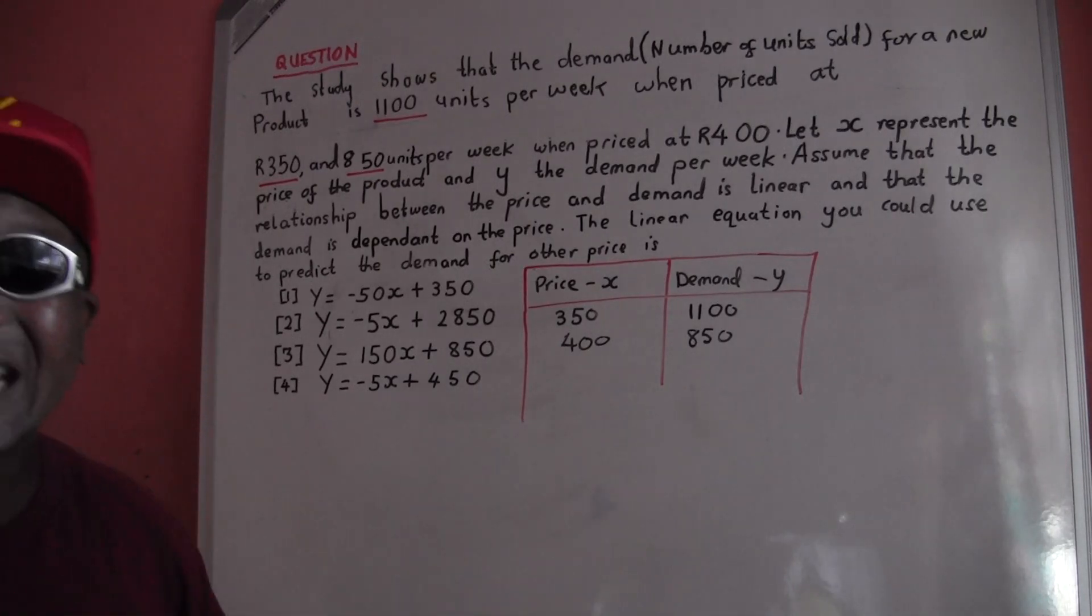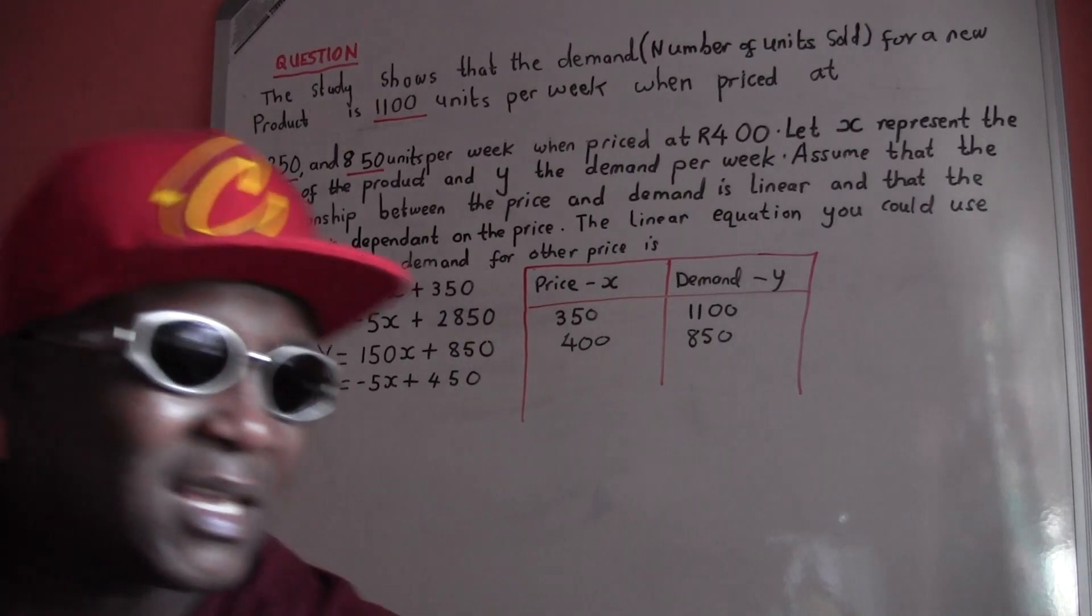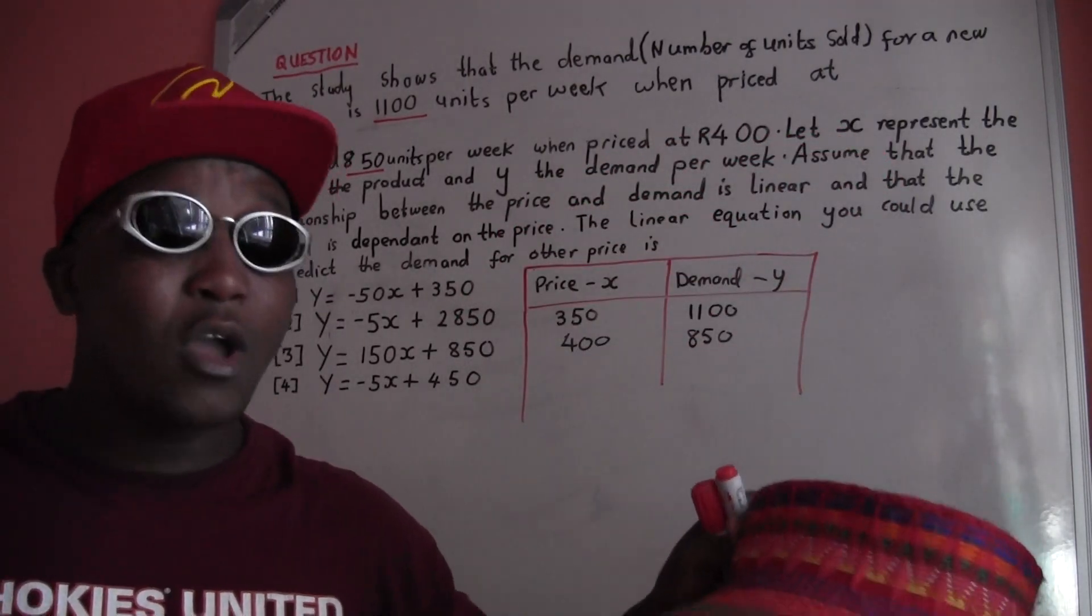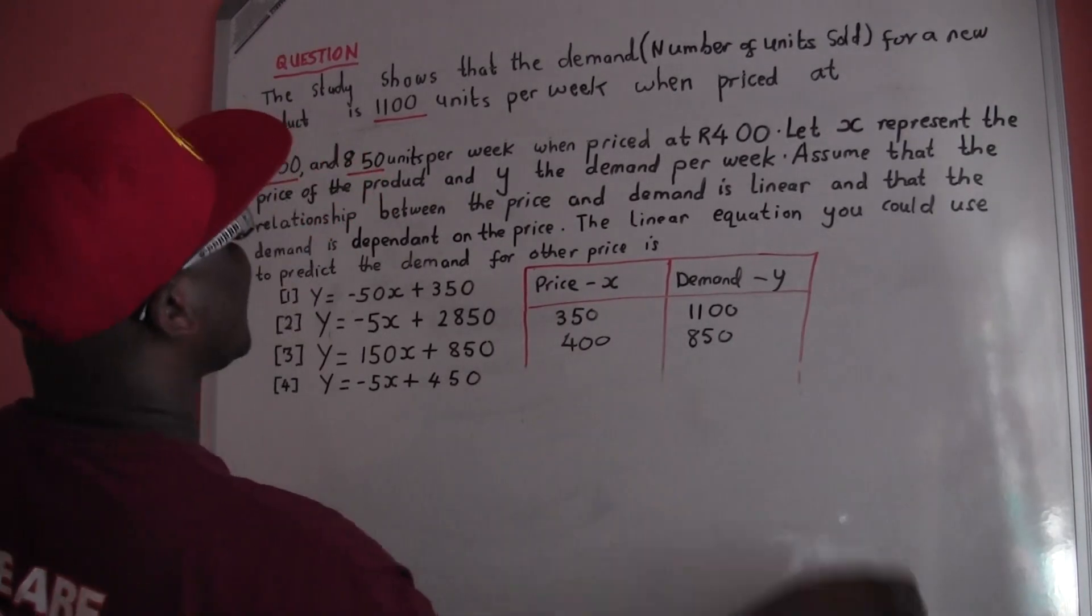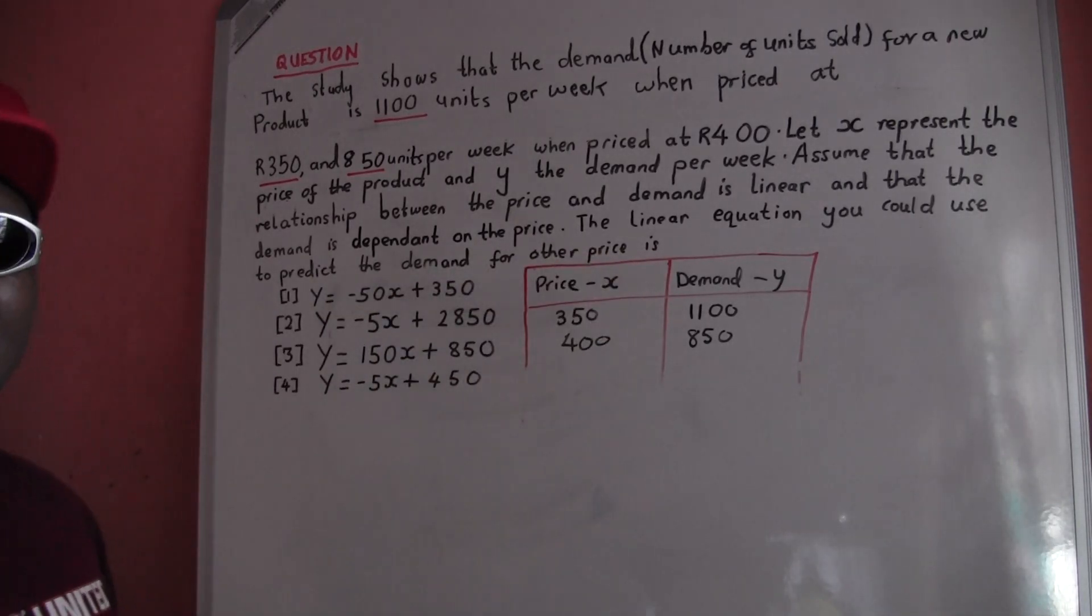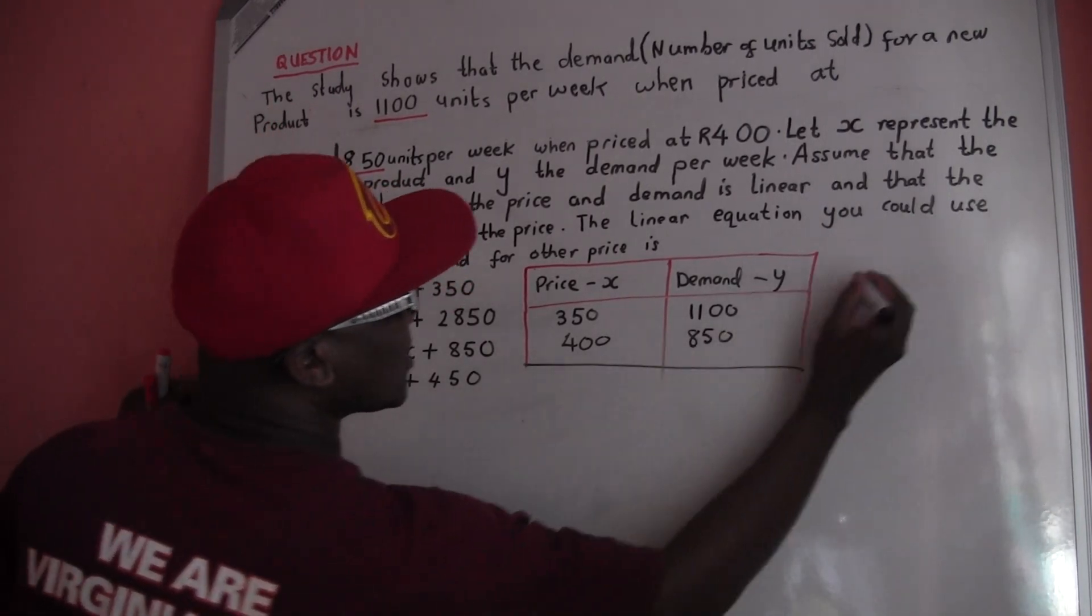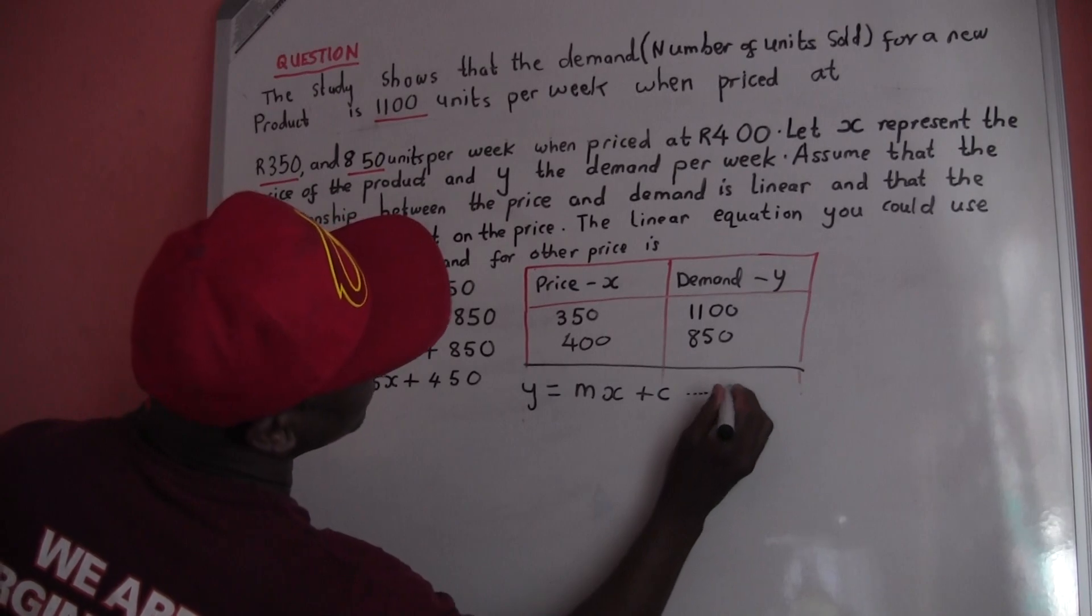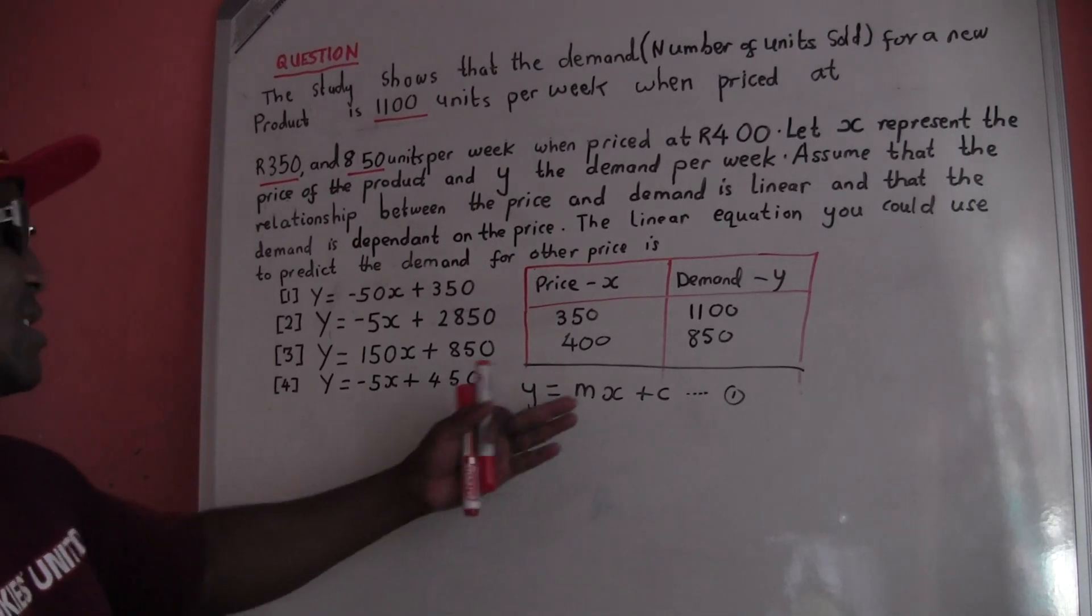Now we're going to create a table here. This is basically an easy way to do this. They say X represent the price of products, so X is going to represent price, and Y represents demand per week. So now let's create a small table here - Price and Demand. Price stands for X, and demand for Y, just like X-Y coordinates mathematically.